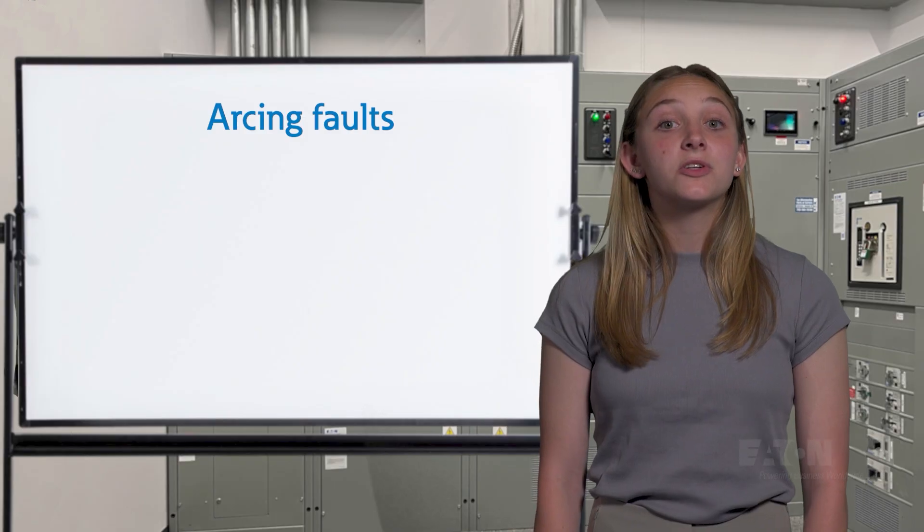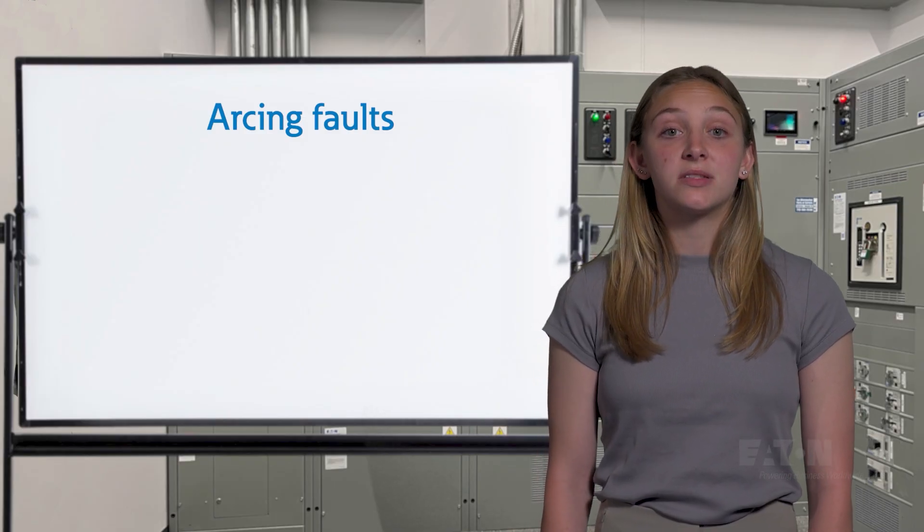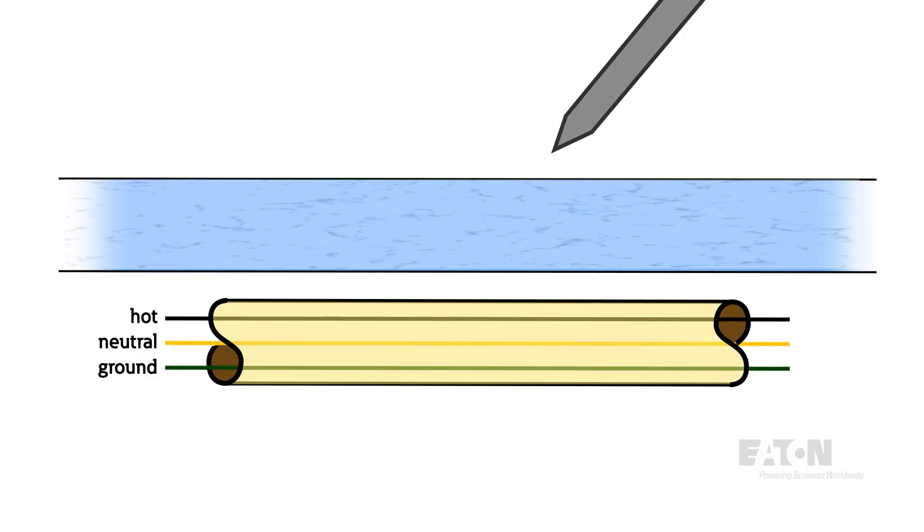Arcing faults, similar to ground faults, are all about detection. Imagine you're hanging up a picture frame and drive a nail into a wall. If you're very unlucky, on the other side of the drywall may be a wire that the nail nicks.